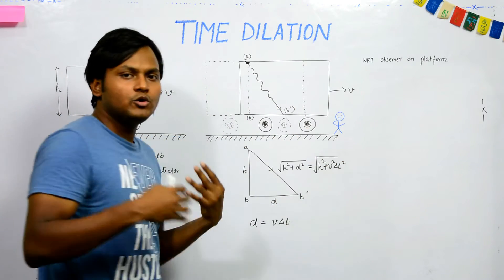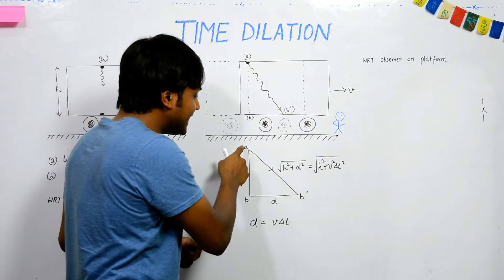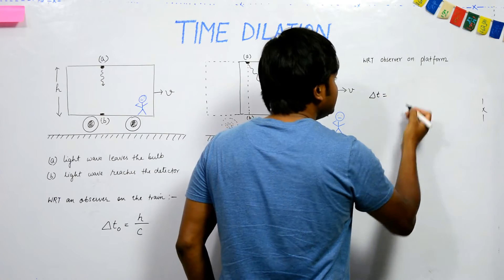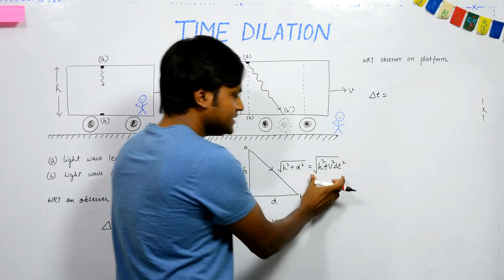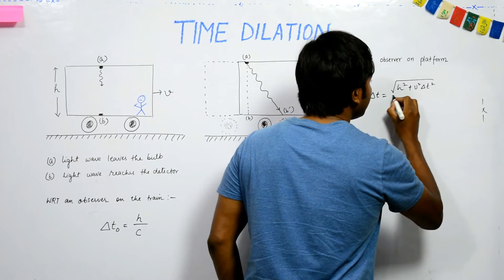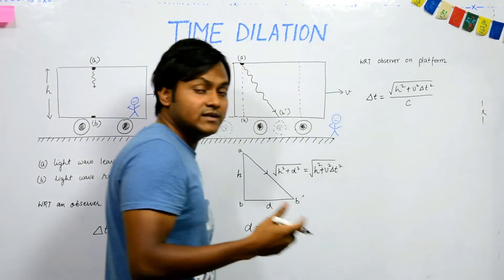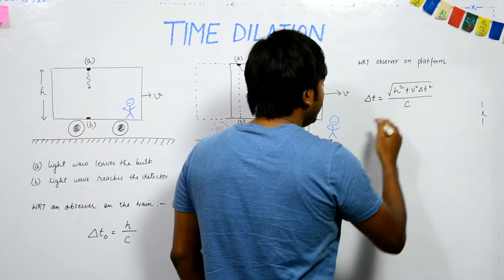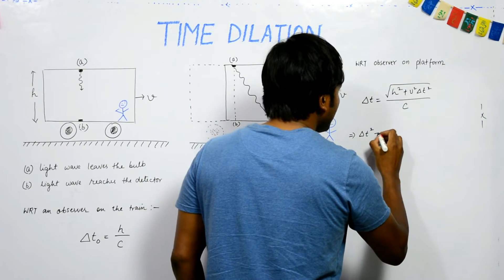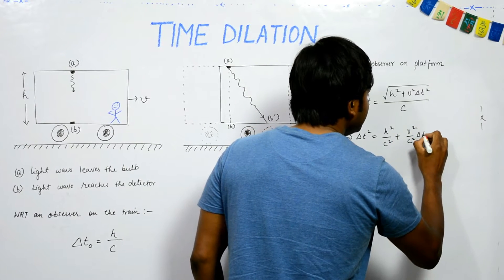From the platform observer's perspective, the time period ΔT equals the path length √(H² + v²ΔT²) divided by the speed of light C. Squaring both sides gives: ΔT² = H²/C² + (v²/C²)ΔT².